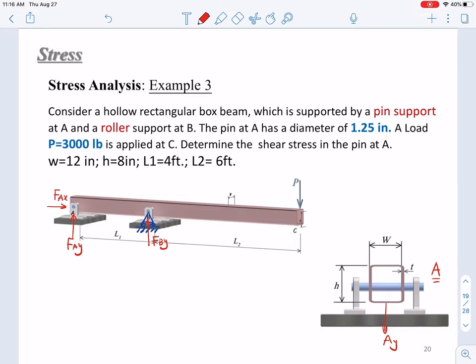So, look at here. If you add force A_Y to this box beam, then you will have two interfaces. Here is the first one, and here is the second one. You have two interfaces to carry this shear force. So, this shear force will be divided into two. Knowing these things, we can do more analysis to determine the shear stress at point A.